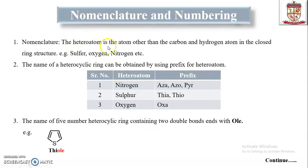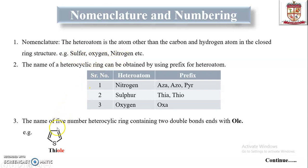First, what is a heteroatom? The heteroatom is an atom other than carbon or hydrogen in a closed ring structure. Examples of heteroatoms include sulfur, oxygen, nitrogen, and so on.